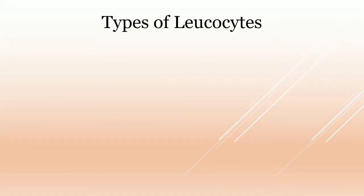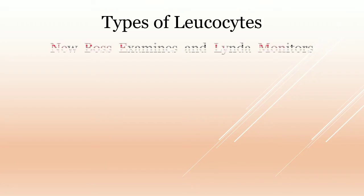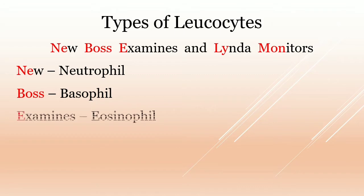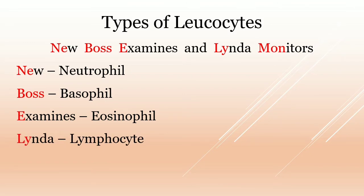For the types of leukocytes, the key sentence is 'New boss examines and Linda monitors.' Here, 'New' stands for neutrophil, 'boss' stands for basophil, 'examines' E stands for eosinophil, 'Linda' Ly stands for lymphocyte, and 'monitors' Mon stands for monocyte. So these are the five types of leukocytes: neutrophil, basophil, eosinophil, lymphocyte, and monocyte.